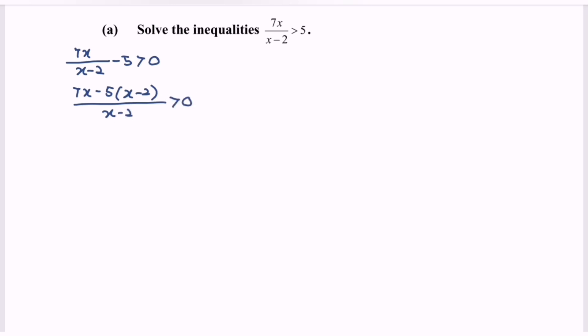Step number three, expand the situation, then simplify. So 7x minus 5x plus 10 over x minus 2 greater than 0. We will have 2x plus 10 over x minus 2 greater than 0.